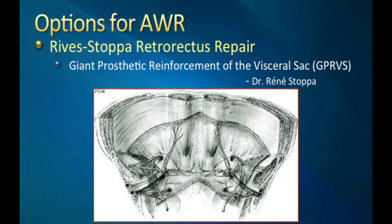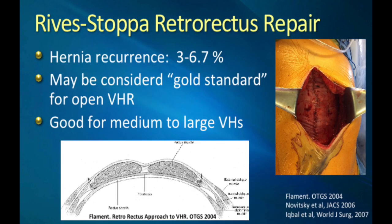I absolutely love Dr. Stoppa's quote about giant prosthetic reinforcement of the visceral sac, because when you actually look at a transversus abdominus release and the wide overlap, I think you truly do achieve his vision of giant prosthetic reinforcement of the visceral sac. I still perform plenty of Rives-Stoppa retrorectus repairs. It's got great results, low recurrence rate, and many consider this the gold standard for open ventral hernia repair.